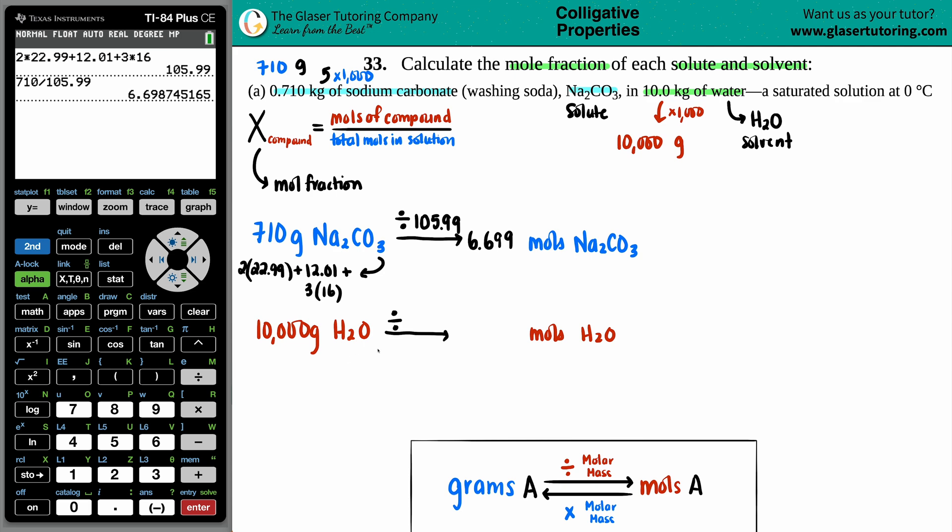Let's do the same for the water. I have two hydrogens, each hydrogen on my periodic table is 1.008, plus oxygen is 16. So I'll take my 10,000 grams, divide it by that number. 555.06, that's good enough.